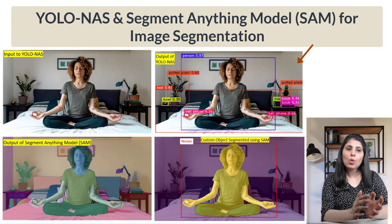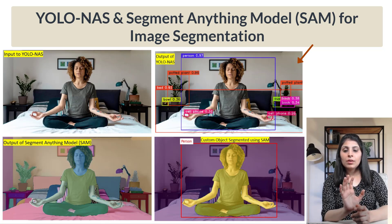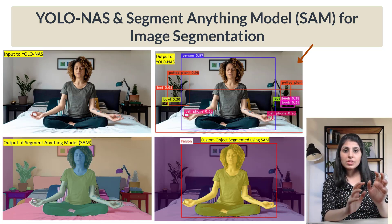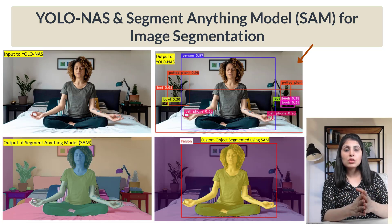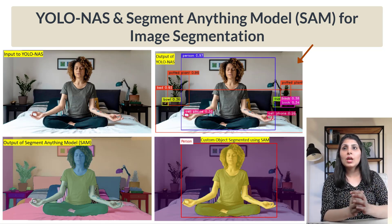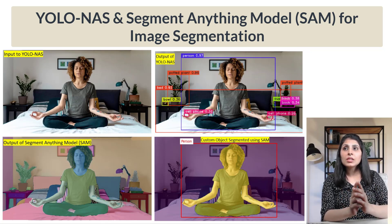For today's example I am not working on a custom dataset — I am working on the person class of the COCO dataset. Our main goal is to put a segmentation mask on the person class. The pre-trained YOLO-NAS model I'm using is trained on the COCO dataset for object detection, and you can see in the second image that various objects are detected.